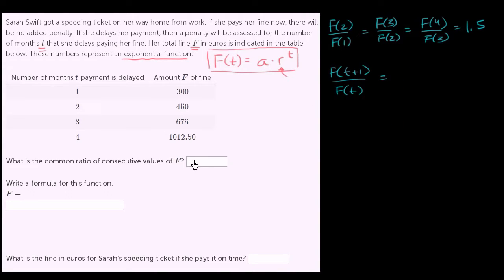And just to make it clear why this r is called the common ratio, let's just do this general form. So f of t plus one, well that's just going to be a times r to the t plus one power. And f of t is a times r to the t power. So this is going to be r to the t plus one minus t, which is just going to be equal to r to the first power, which is just equal to r. So this variable r is going to be equal to this common ratio.